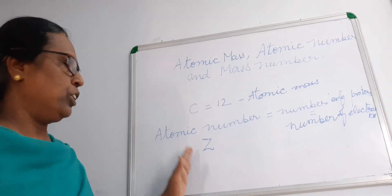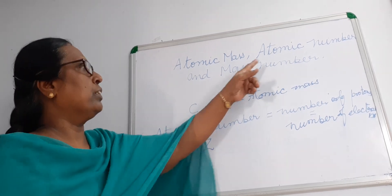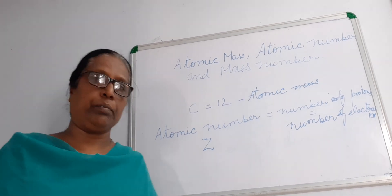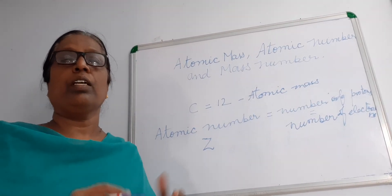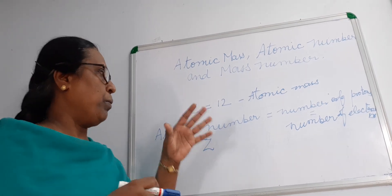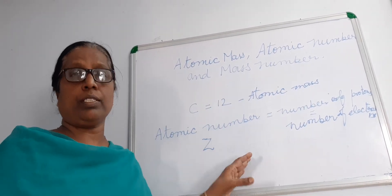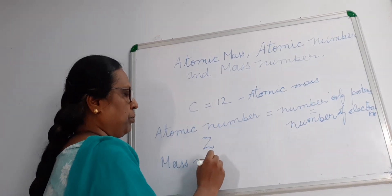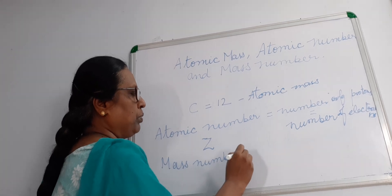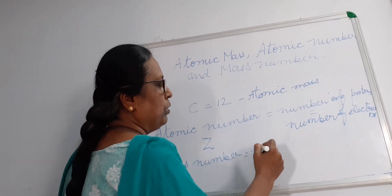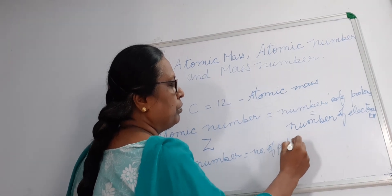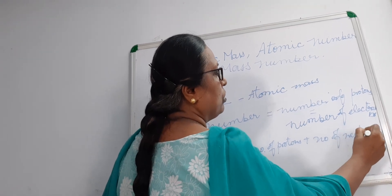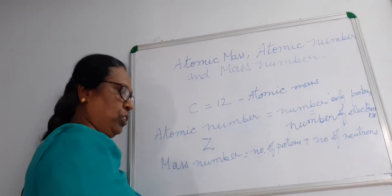Atomic number is denoted with the letter Z. And next is mass number. What is the mass number of an atom? The mass number is the total of protons and neutrons together — that means, the number of protons in the nucleus plus the number of neutrons present in the nucleus.